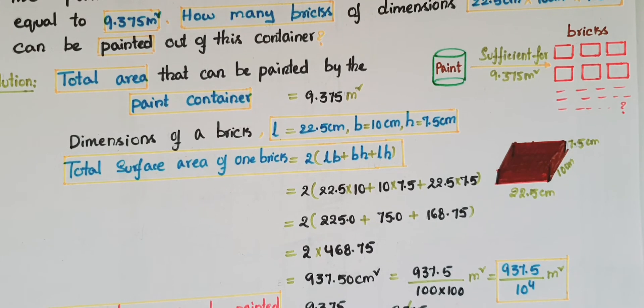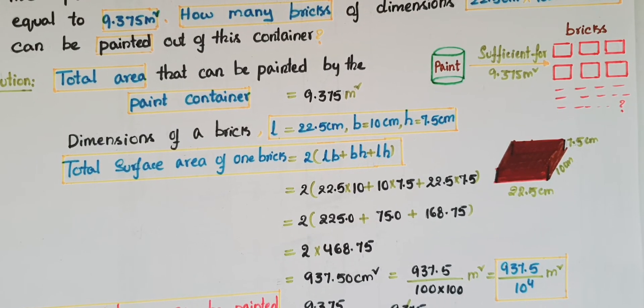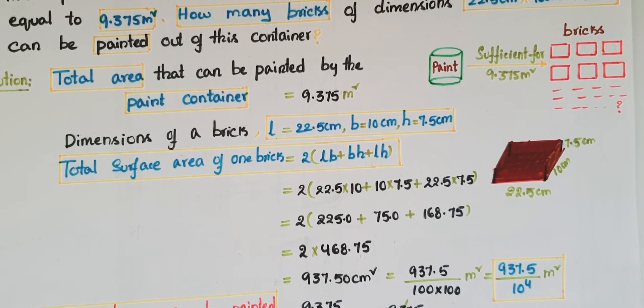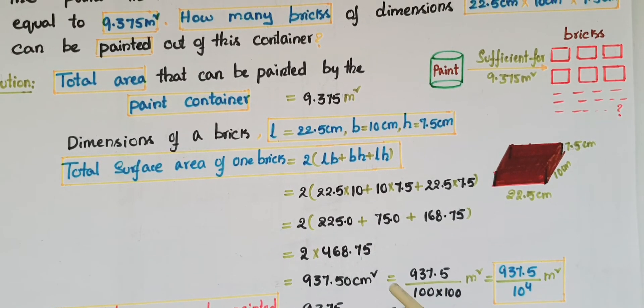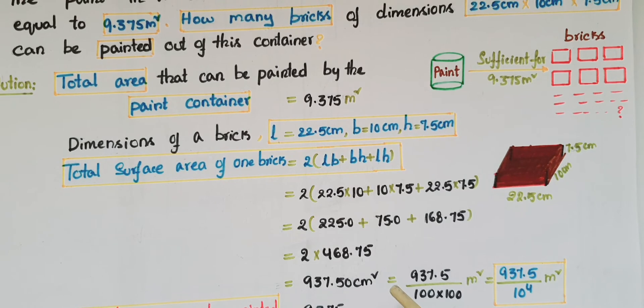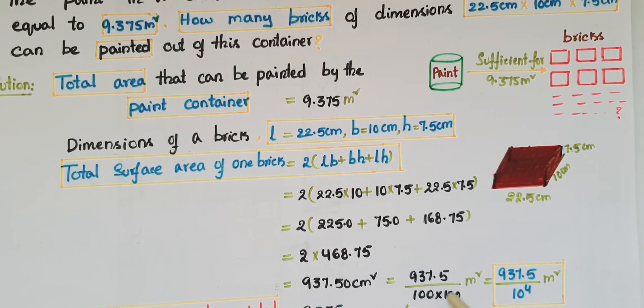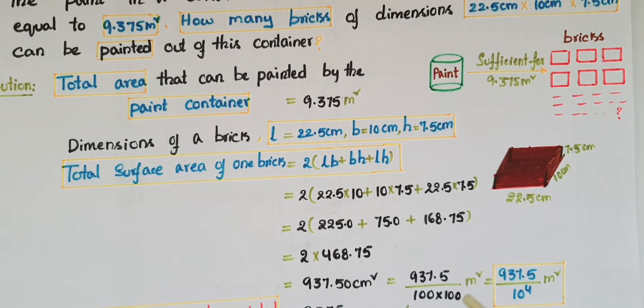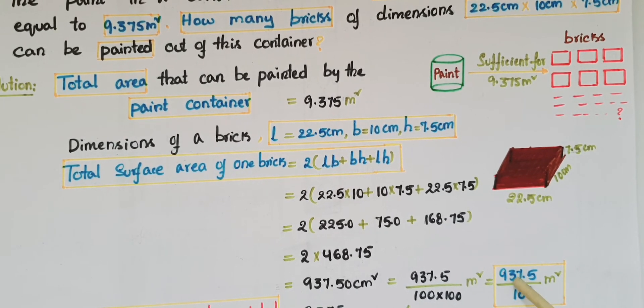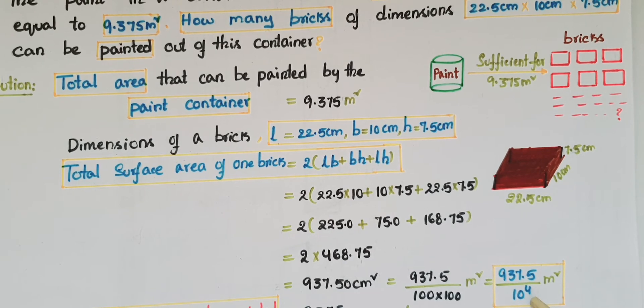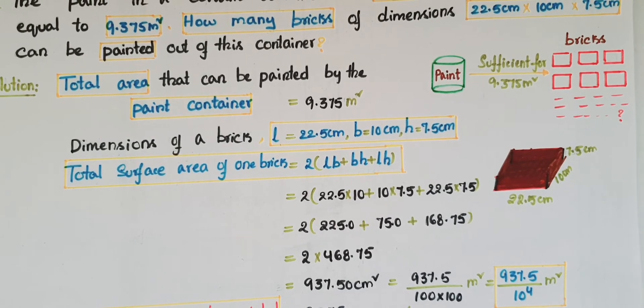Now convert 937.5 cm² into meter square. Since 1 cm = 1/100 m, we divide by 100 × 100 = 10,000. So 937.5 cm² = 937.5 / 10⁴ meter square.